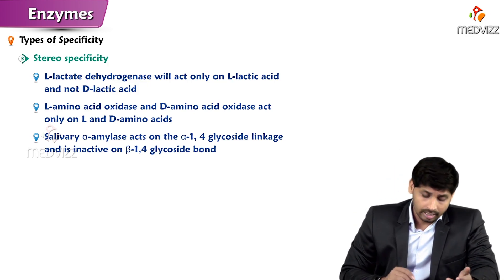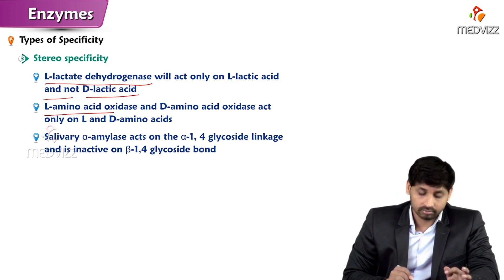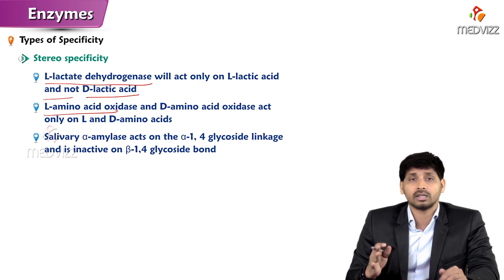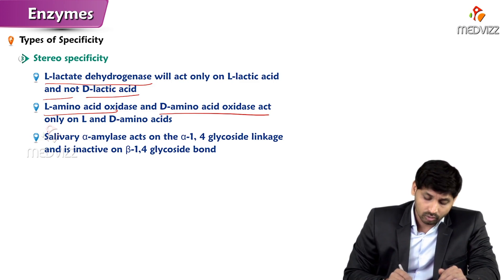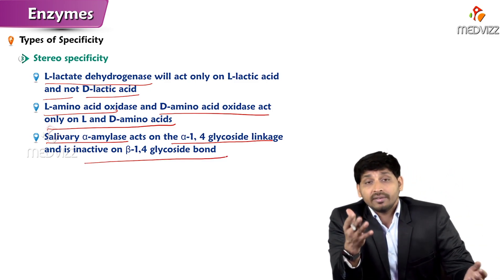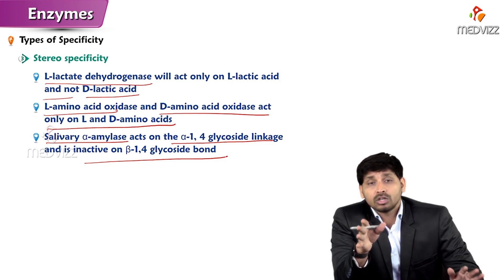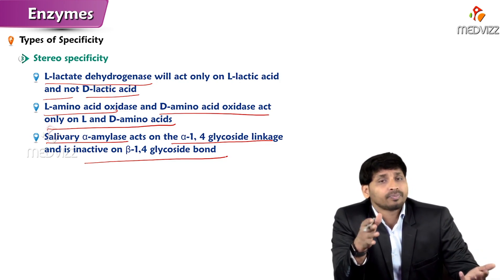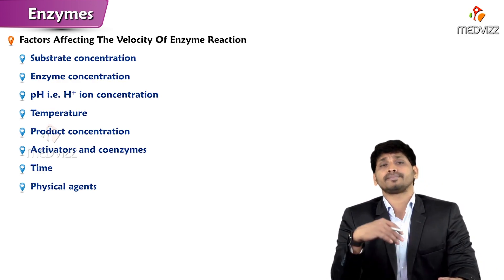Stereospecificity: L-lactate dehydrogenase will act only on L-lactic acid but not D-lactic acid. L-amino acids are biologically active; we require L-forms of amino acids, not D-amino acids. D-amino acid oxidases act only on D-amino acids. Salivary alpha-amylase acts on alpha-1,4 glycosidic linkages and is inactive on beta-1,4 glycosidic bonds. Starch is made up of alpha-D glucose, while cellulose contains beta-D glucose with beta-1,4 glycosidic bonds — which is why we cannot digest grass. That's all about specificity of enzymes.